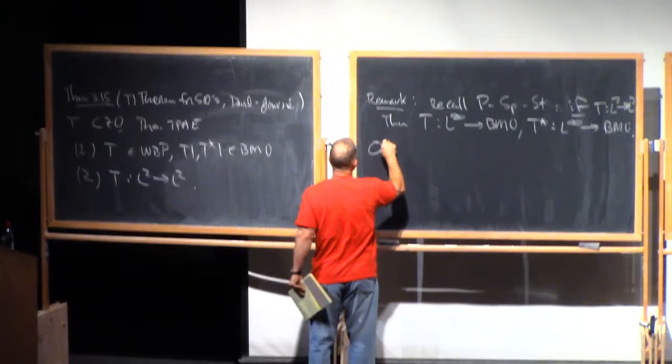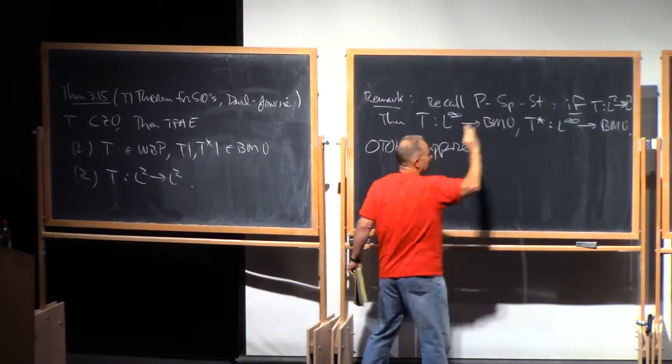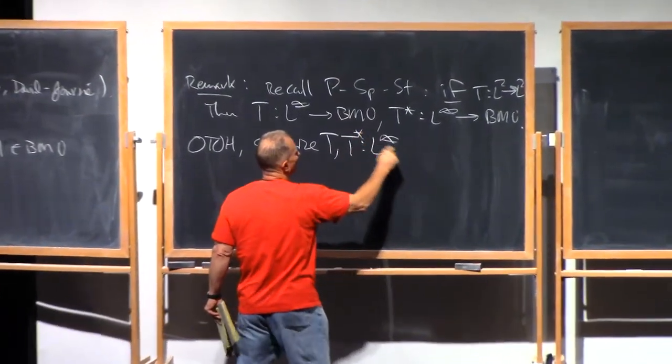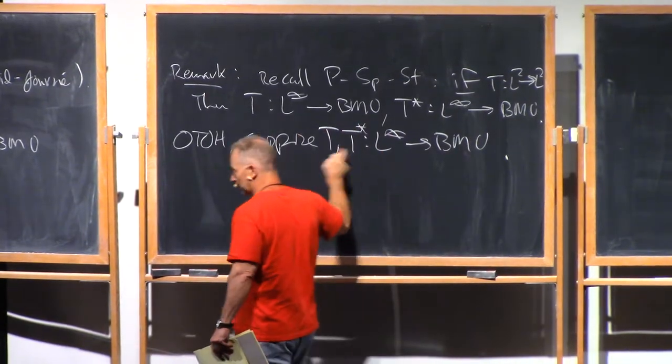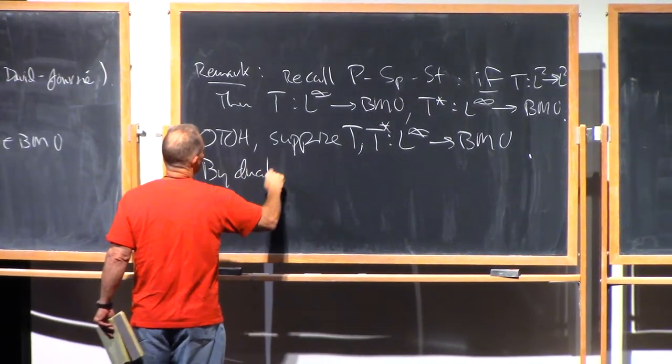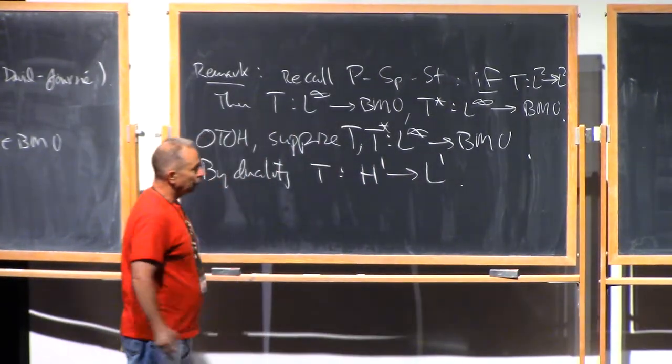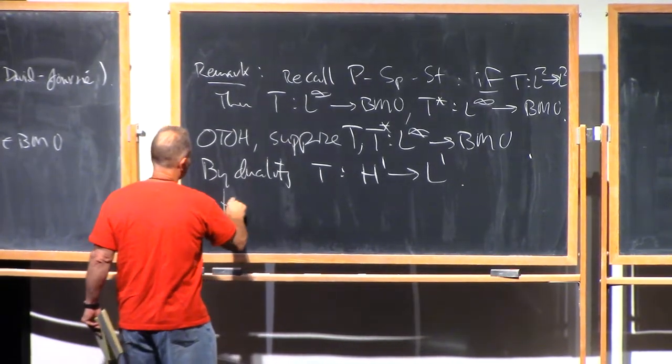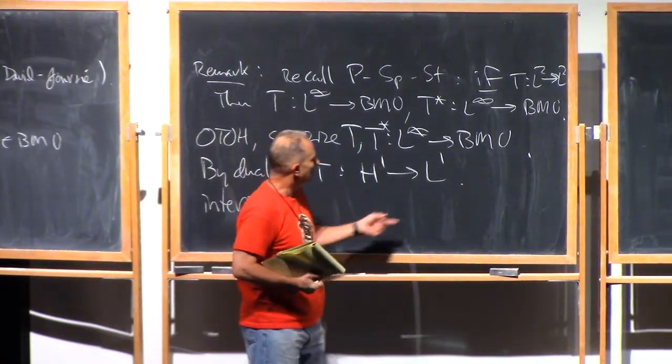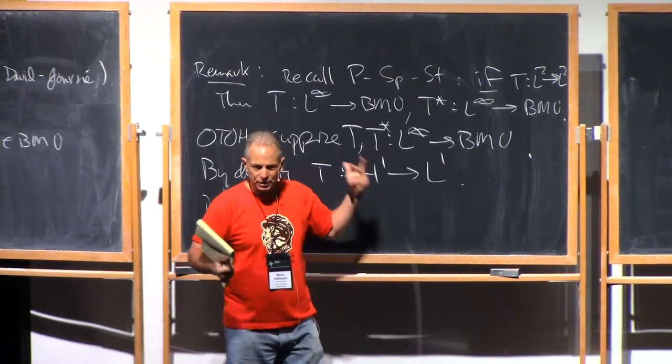On the other hand, suppose that you don't necessarily know a priori that T is bounded on L2, but you do know that T and T star mapped L infinity into BMO. Well, dualizing the estimate for T star, then you also get that T maps Hardy space H1 into L1. And then interpolating, there's a version of interpolation due to Fefferman and Stein where BMO can substitute for L infinity as an endpoint and H1 can substitute for L1.